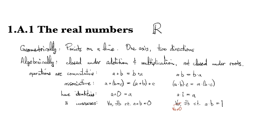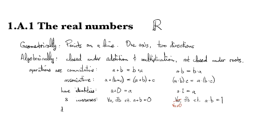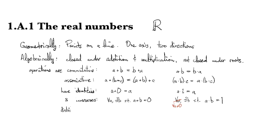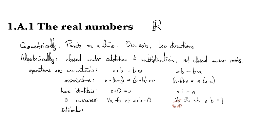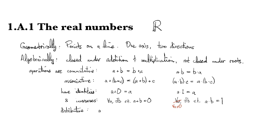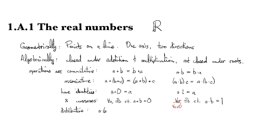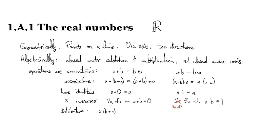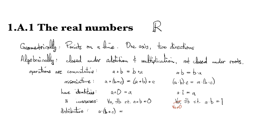Then we also have the distributive property. This is how multiplication and addition play together. Multiplication distributes over addition, meaning that a times a sum is the same thing as a times the first guy plus a times the second guy.